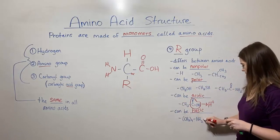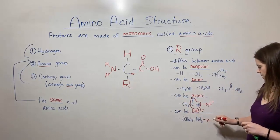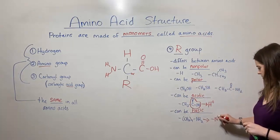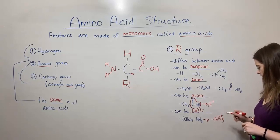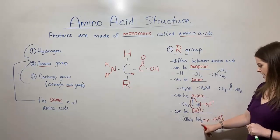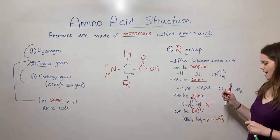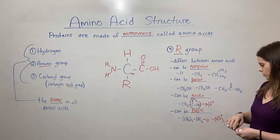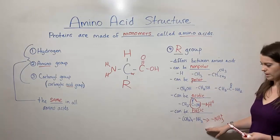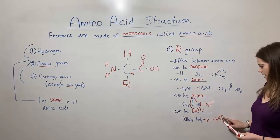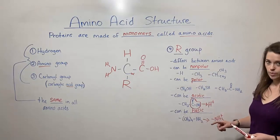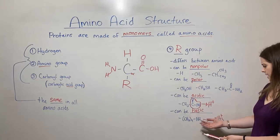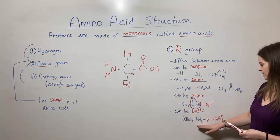And so this one it's basic because it can actually accept a proton and become positively charged. So this NH2 becomes NH3 plus and anything that reduces the concentration of hydrogen ions in a solution by adding one onto this amino group. That makes it a base because it's a proton acceptor. So that's an example of a basic one.